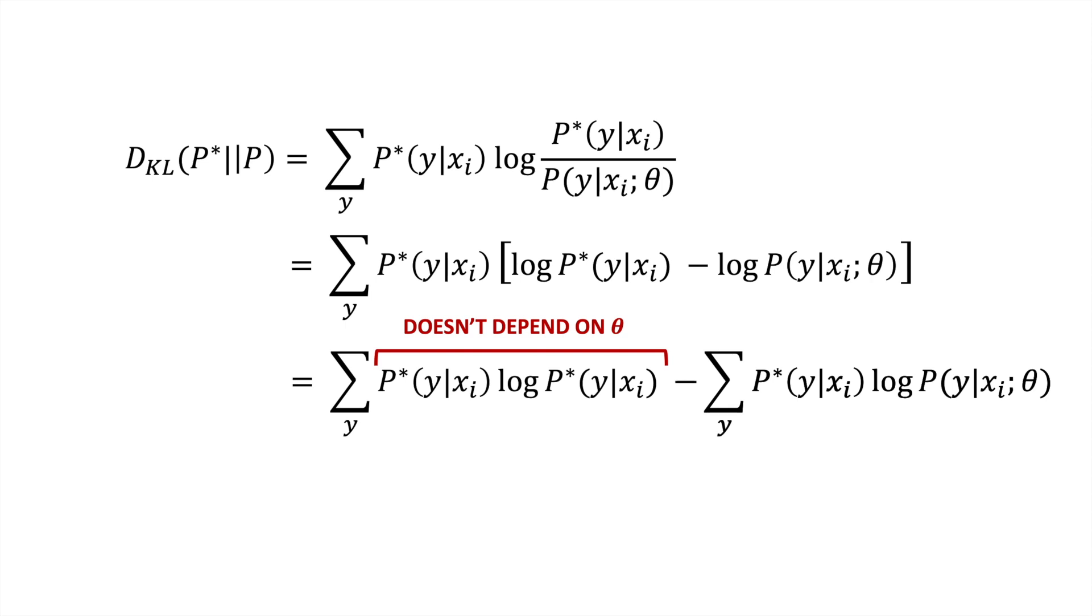So if we're minimizing this expression with respect to parameters theta, it's exactly the same as minimizing the second term, which might look a bit familiar as it's the cross entropy formula we saw at the start of the video.